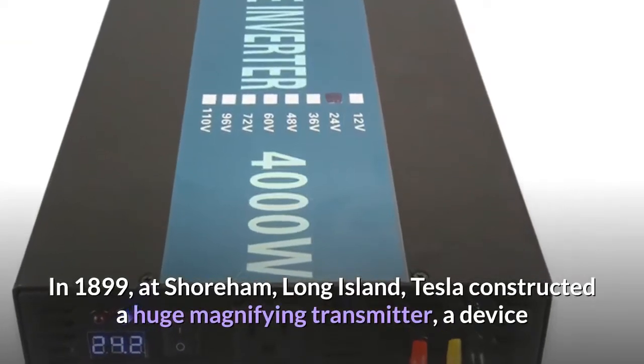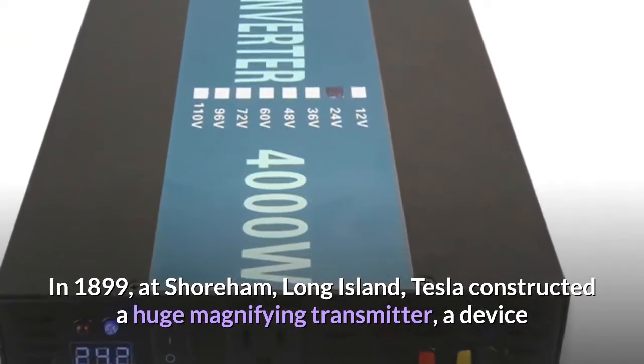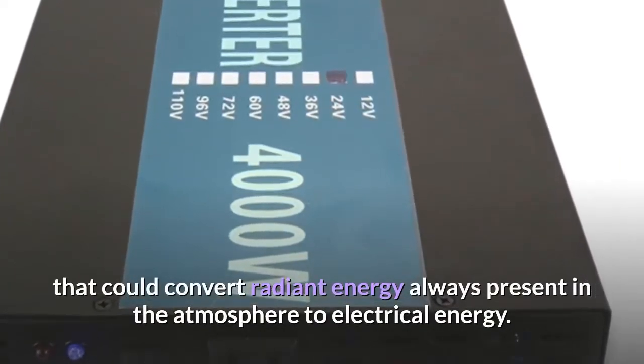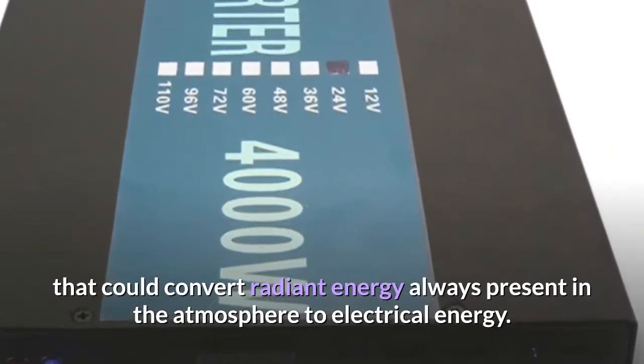In 1899, at Shoreham, Long Island, Tesla constructed a huge magnifying transmitter, a device that could convert radiant energy always present in the atmosphere to electrical energy.